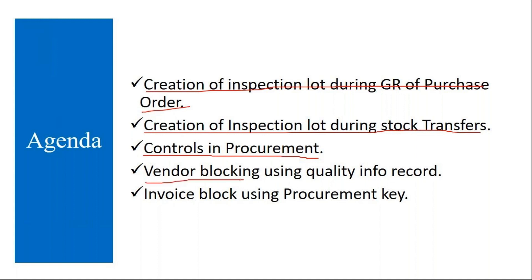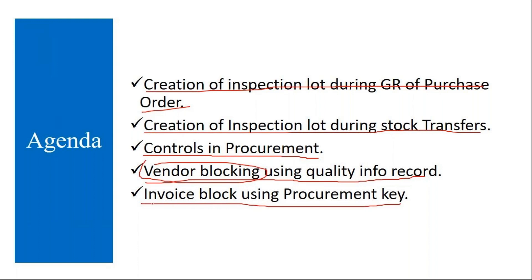Vendor blocking using quality info record — if the quality side makes certain settings, using that you can block the vendor. And invoice block using procurement key — so you can block the invoice also. These are the integration points between MM and QM.